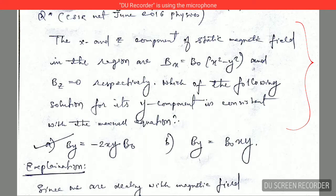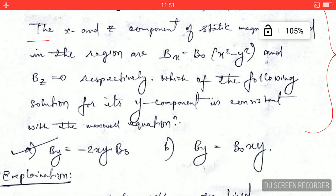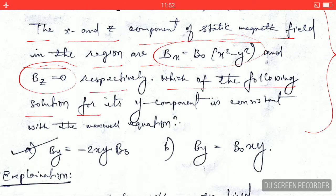Let's see the question. The x and z components of the static magnetic field in the region are: Bx = B0(x² + y²) and Bz = 0 respectively. Which of the following solution for its y component is consistent with the Maxwell equation? So finally you have to find out which is the correct equation.